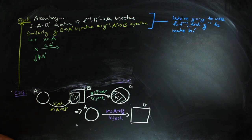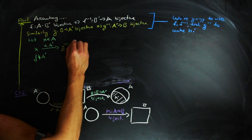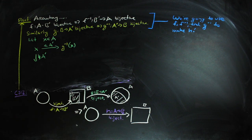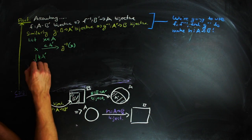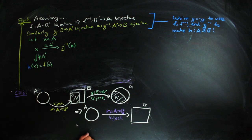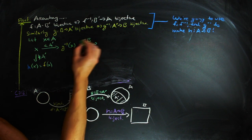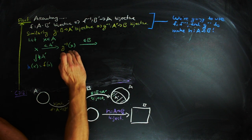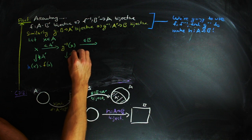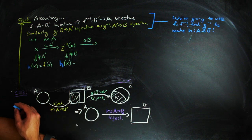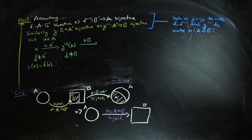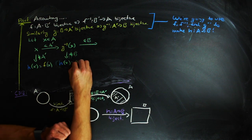One of two things can happen. Either it's in A' or it's not. If it's not, we define H of X as F of X. If it is, then we can track it back into B using G inverse. Now, two things can happen with G inverse of X. Either it is in B' or it's not in B'. If it is not, then we go ahead and define H of X as G inverse of X.